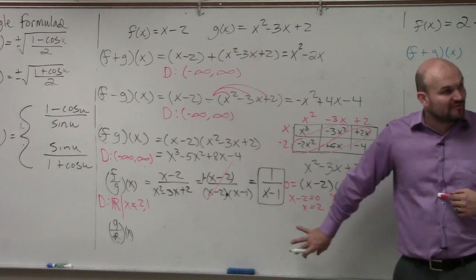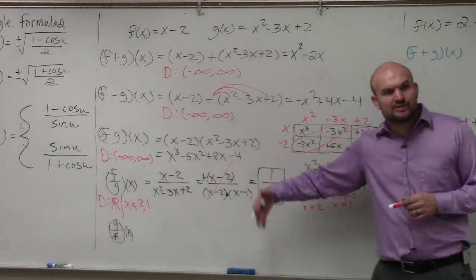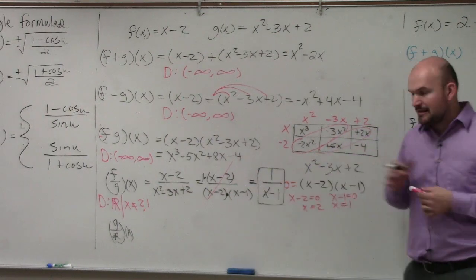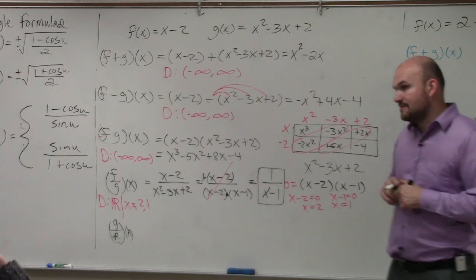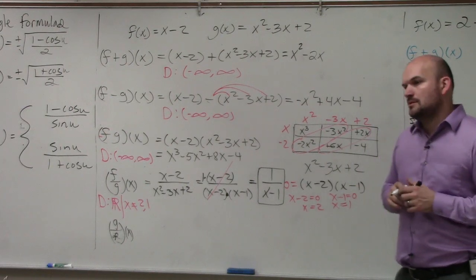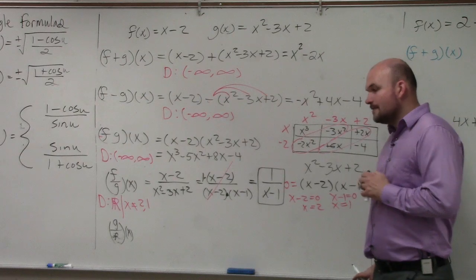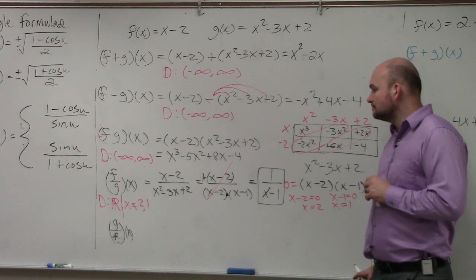So therefore, your final simplified answer is 1 over x minus 1. That would be your simplified answer. So always look to simplify by doing factoring, so forth.